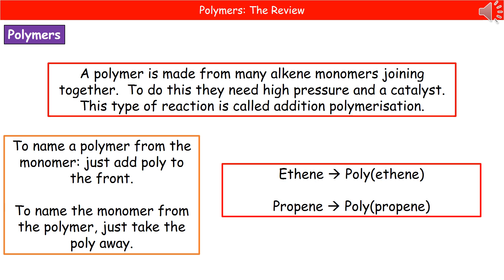Welcome to our review on polymers. When we're talking about a polymer, we're referring to something that's made from many alkene monomers joining together. To do this, they need two conditions: a high pressure and a catalyst.